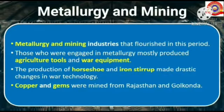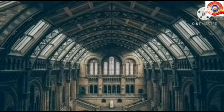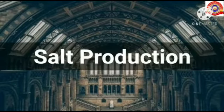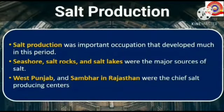The fourth one is metallurgy and mining. Metallurgy and mining industries flourished in the 13th century in India. Those who were engaged in metallurgy mostly produced agriculture tools and war equipment. The production of horseshoe and iron stirrup made drastic changes in war technology. Copper and gems were mined from Rajasthan and Golconda.